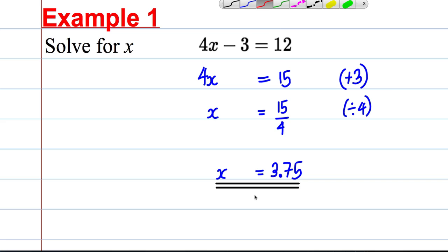Now always check your work. So this is the solution. You need to check it. Now 4 times 3.75, if we were to substitute this back in on your calculator, 4 times 3.75 is 15 and 15 take away 3 is equal to 12. I know I've got the right answer. That's my check. So make sure you lay out exactly like this.